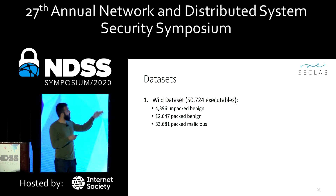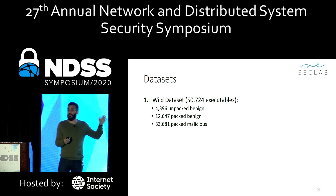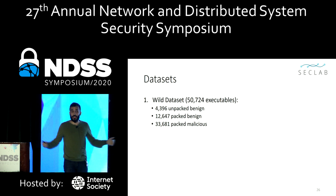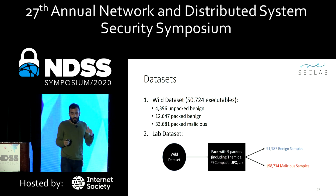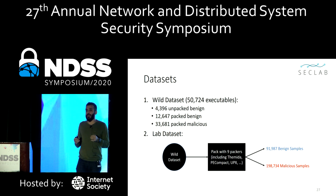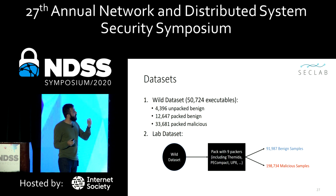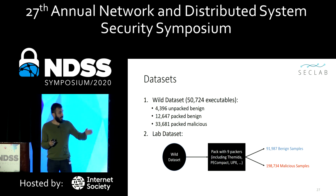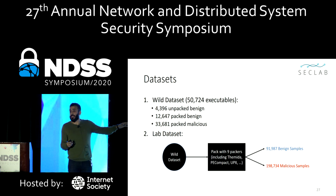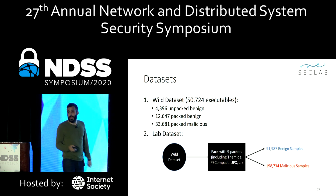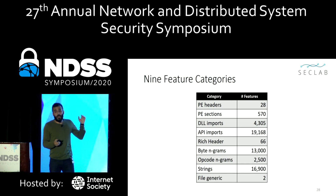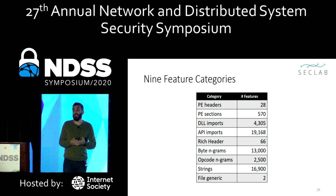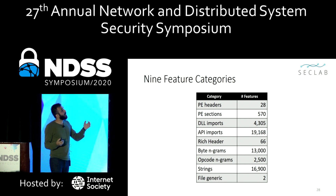We think the steps that we took should be taken by any related work that aims to propose a malware classifier. Here is the composition of our first dataset — the wild dataset — which contains around 51K executables observed in the wild, coming from two different independent sources. For some of our experiments, we also need to know which packer is used to pack the sample. So we created the lab dataset by packing all the executables in the wild dataset with nine different packers, including some free and commercial packers. We discarded those samples that were broken after packing, which is why the numbers don't add up.